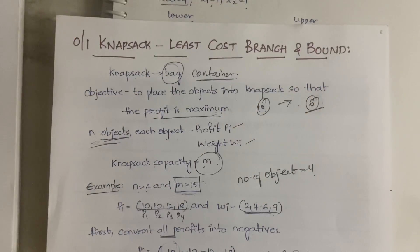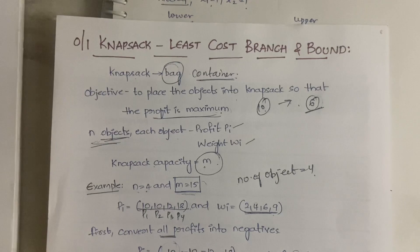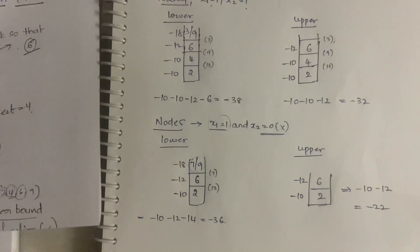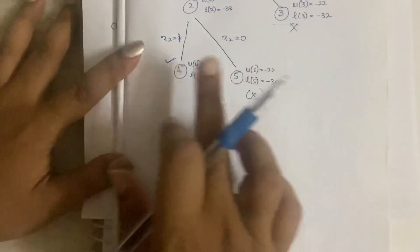Hello everyone, welcome back to my YouTube channel 'Trouble Free'. In this video we are going to have Part 2 of the 0/1 knapsack problem with least cost branch and bound. If you have not watched my previous video, Part 1, watch it and come back, because we are in the middle of the problem. If you have any doubts or comments, let me know in the comment section. So let's continue with the video.